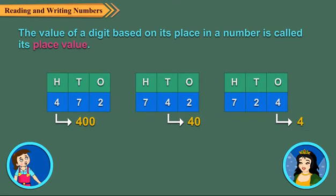In 742, 4 is at 10's place. So, its place value is 4 tens or 40.